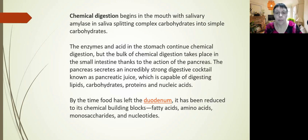Chemical digestion begins in the mouth with the salivary amylase. Saliva splits complex carbohydrates into simple carbohydrates. When you eat white bread and chew it, it starts turning sweet. That's why the complex carbohydrates in bread called amylose are broken down by the enzyme amylase in your saliva into simple carbohydrates or sugars. The enzymes and acid in the stomach continue the chemical digestion, but the bulk of the chemical digestion takes place in the small intestine thanks to the action of the pancreas gland. The pancreas secretes an incredibly strong digestive cocktail known as pancreatic juice that's capable of digesting lipids, fats, carbohydrates, starches, proteins, and nucleic acids. When your pancreas is inflamed and basically digests itself, it's incredibly painful. You digest yourself from the inside out.